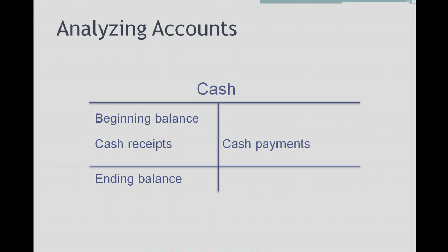Let's look at the cash account first. The cash account has a beginning balance that represents the balance of cash on hand at the beginning of the period. Cash receipts during the period would be debited to cash because cash is an asset, so cash receipts would be debited. Any payments we had in cash would be credited to the cash account, and then we would have an ending balance which represents how much cash we had at the end of the period.